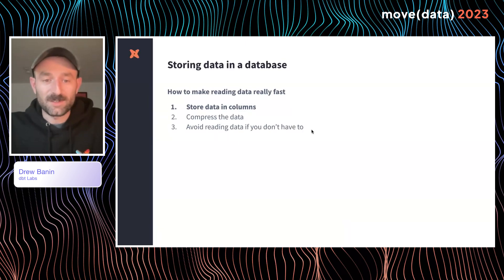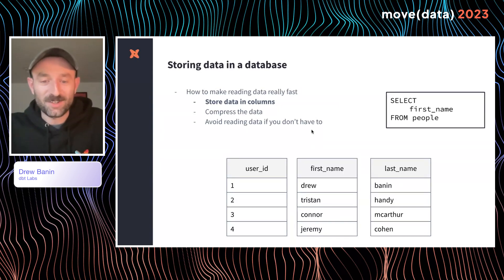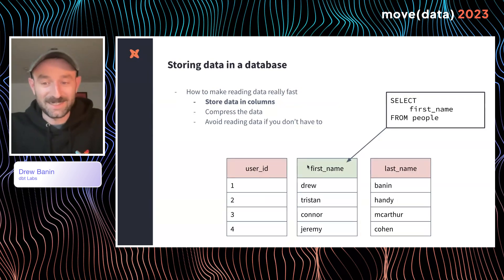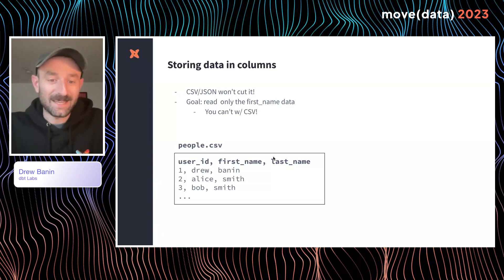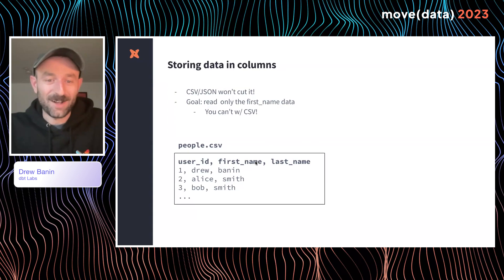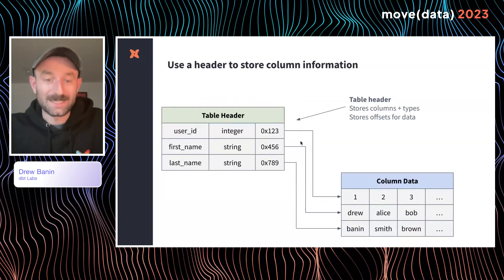The first thing we can do is store our data in columns instead of rows. Say we get a query like select first name from people — this query only cares about the column first name, and doesn't care at all about user ID or last name. So we want to avoid reading the data in those columns. With a CSV file, you need to read the entire file into memory and then scan the first name column and throw everything else away — that's prohibitively slow. Instead, we'll create a file format with a table header and a data section. The table header stores column names, types, and offsets into the data.